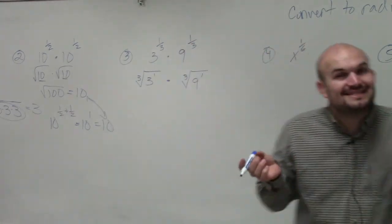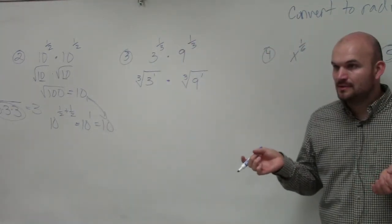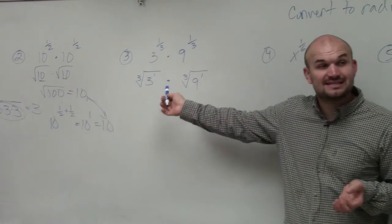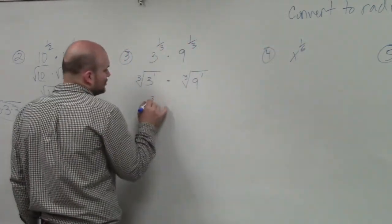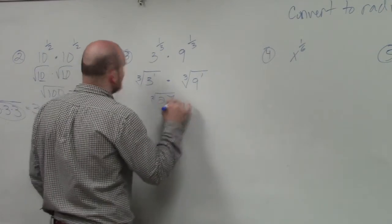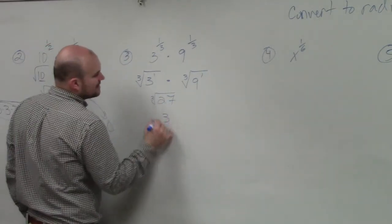So now, is the index exactly the same? So as long as the index is the same, I can multiply these. So that's going to give me the cube root of 27, which we already determined is 3.